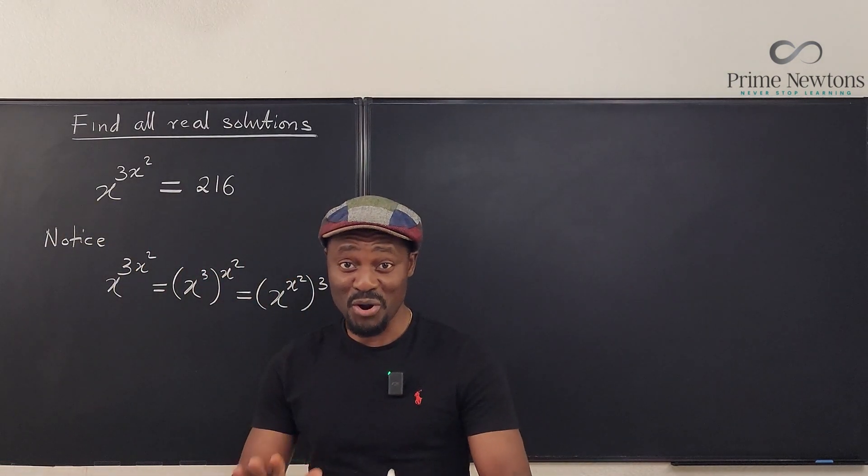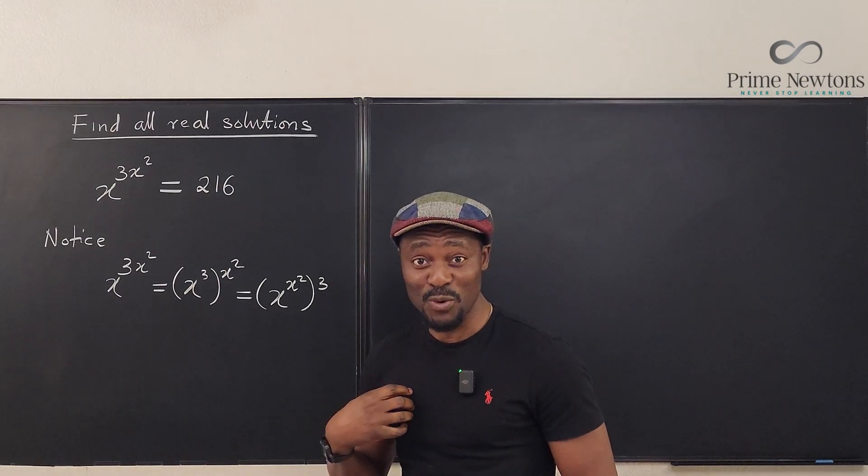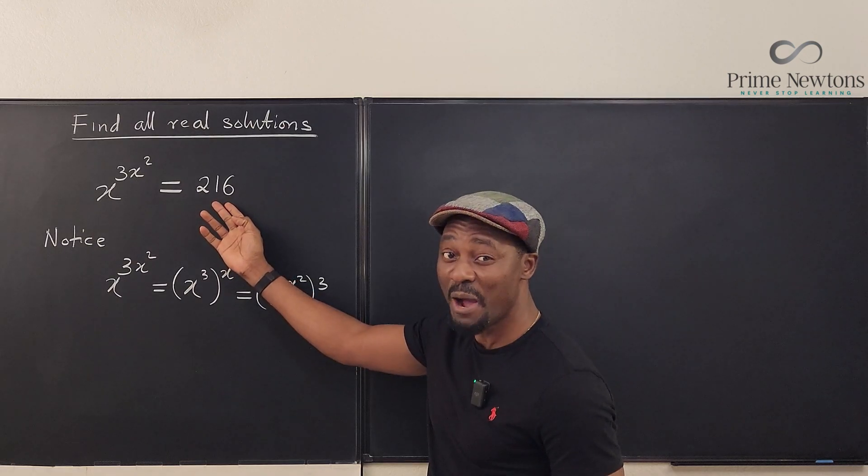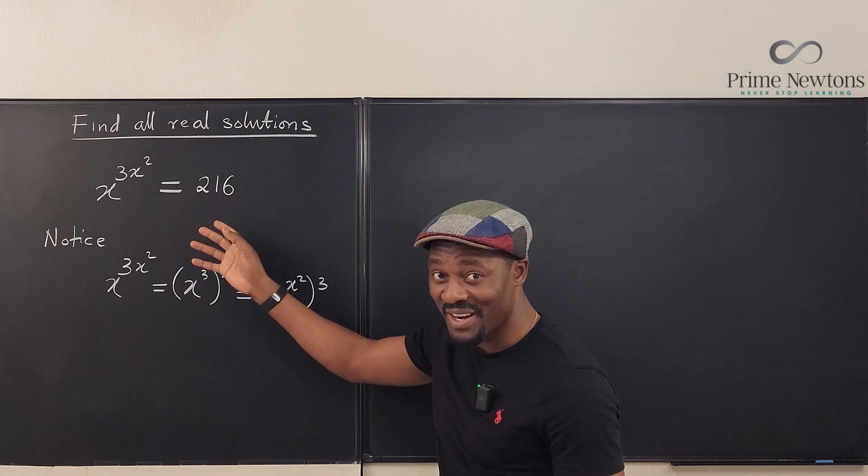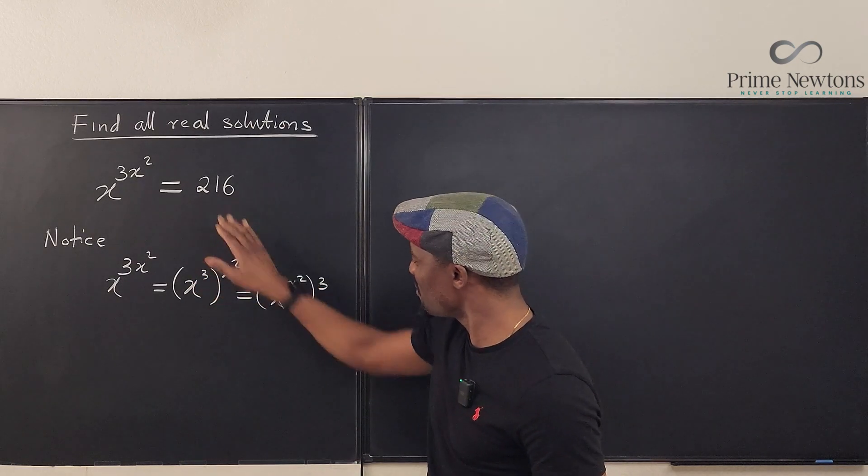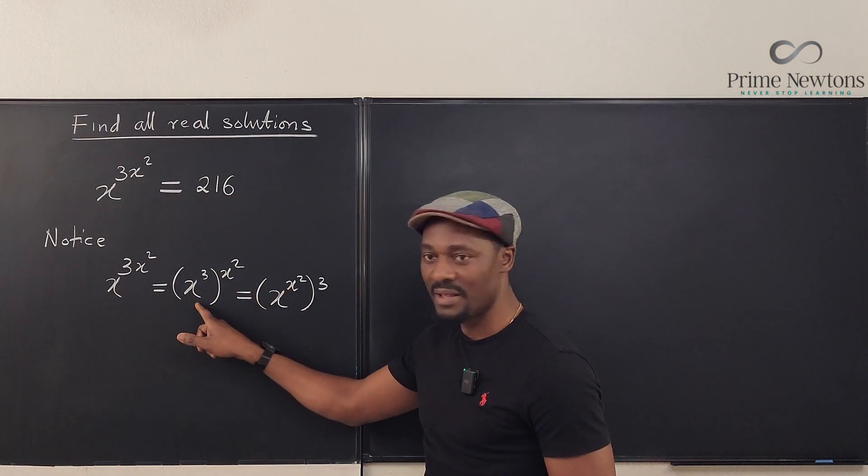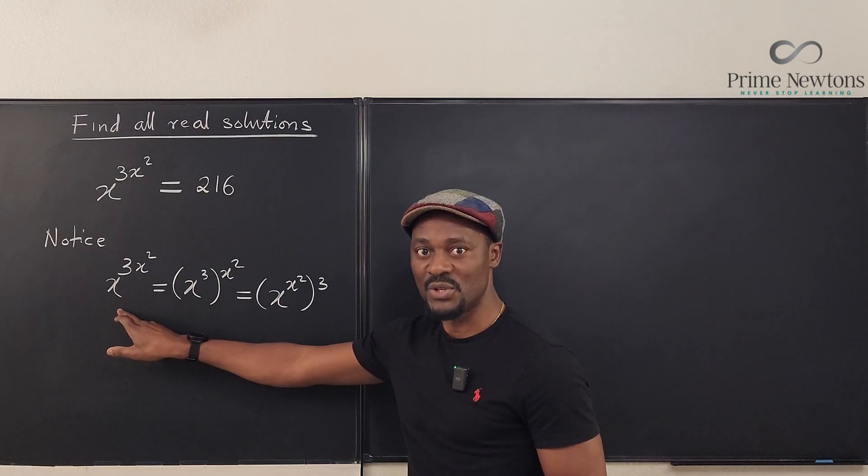So whenever you get a problem like this, you have to choose which one works for you. Well, on the right hand side, I have a number. Therefore, I need to be able to reduce this number. So in this case, I would take this rather than this, because this one, I can't even use it.